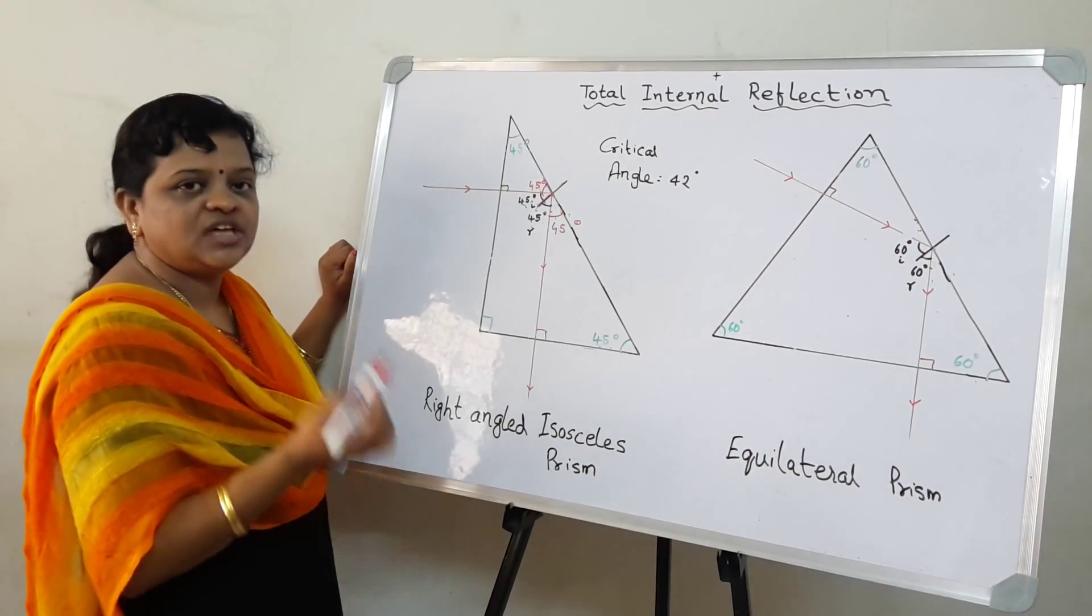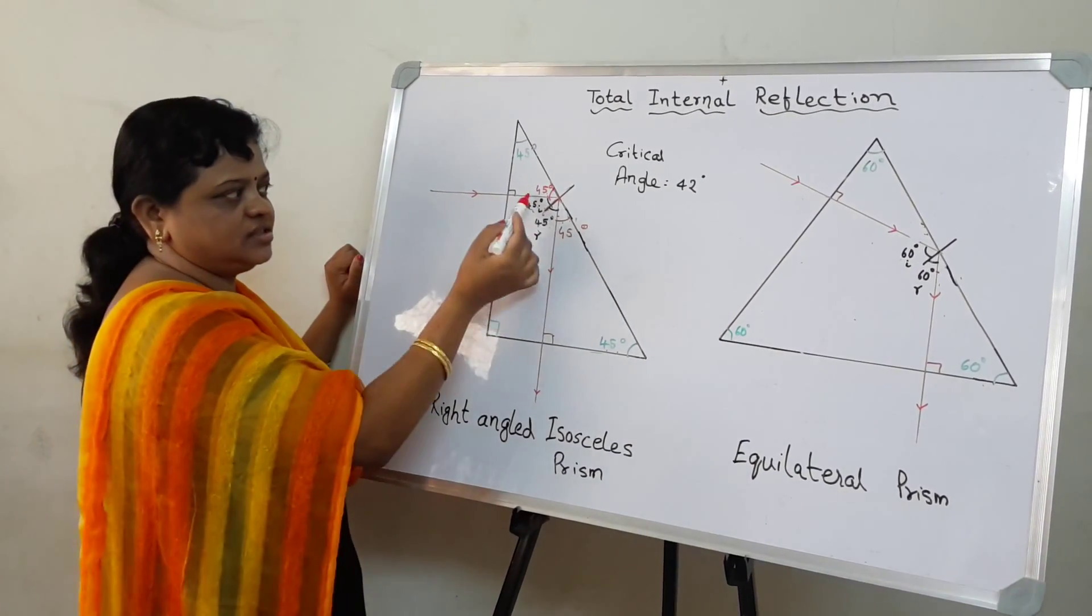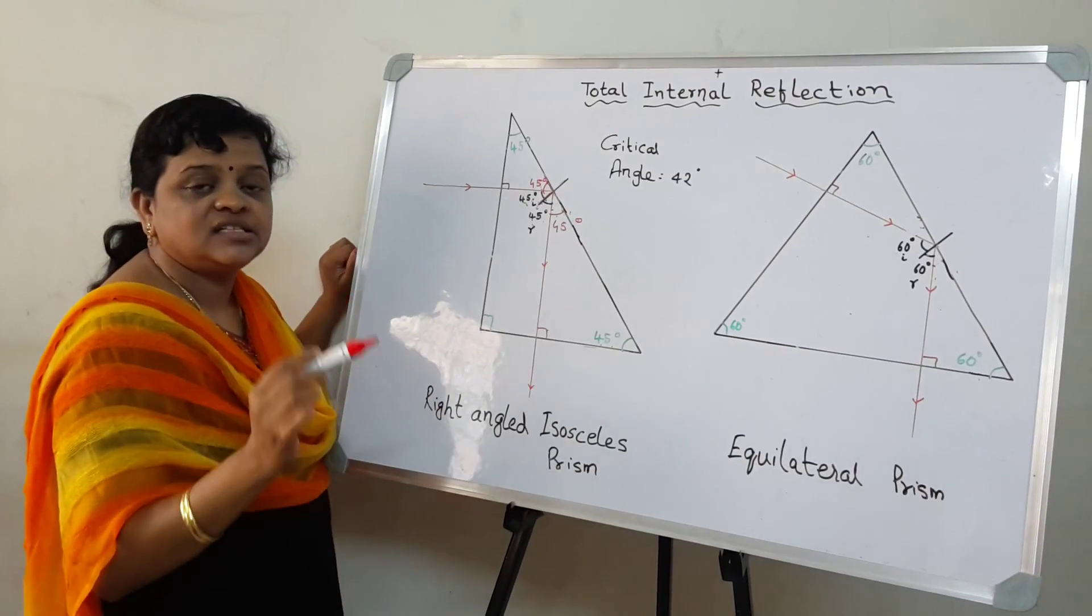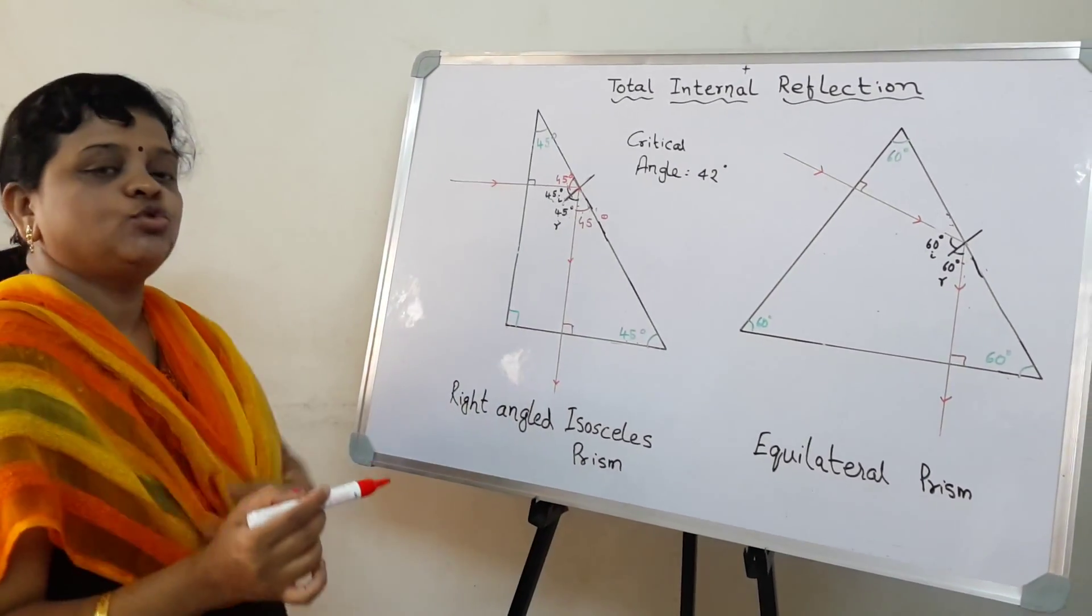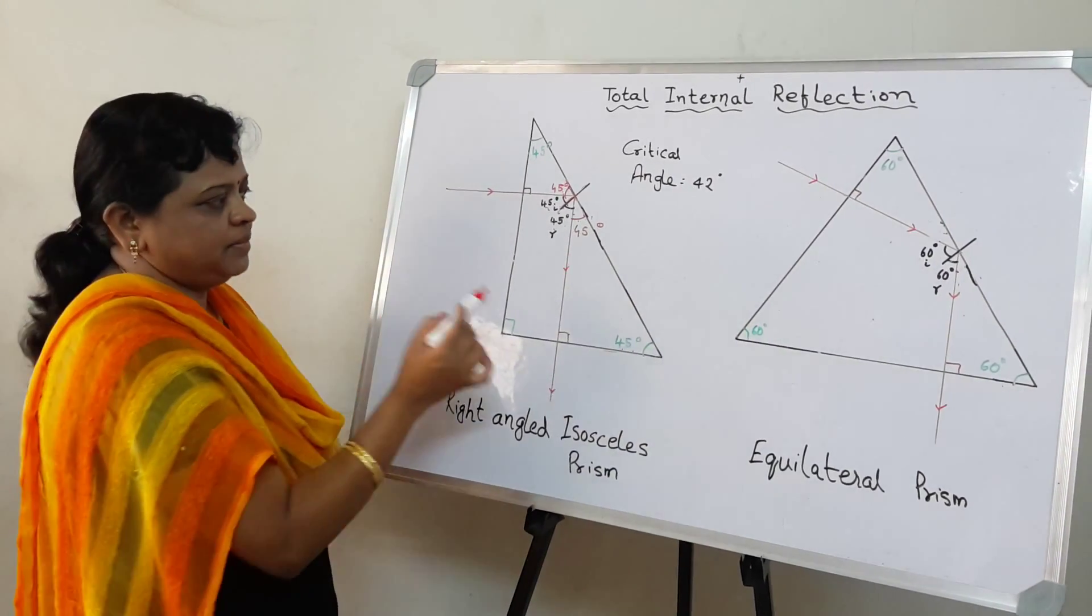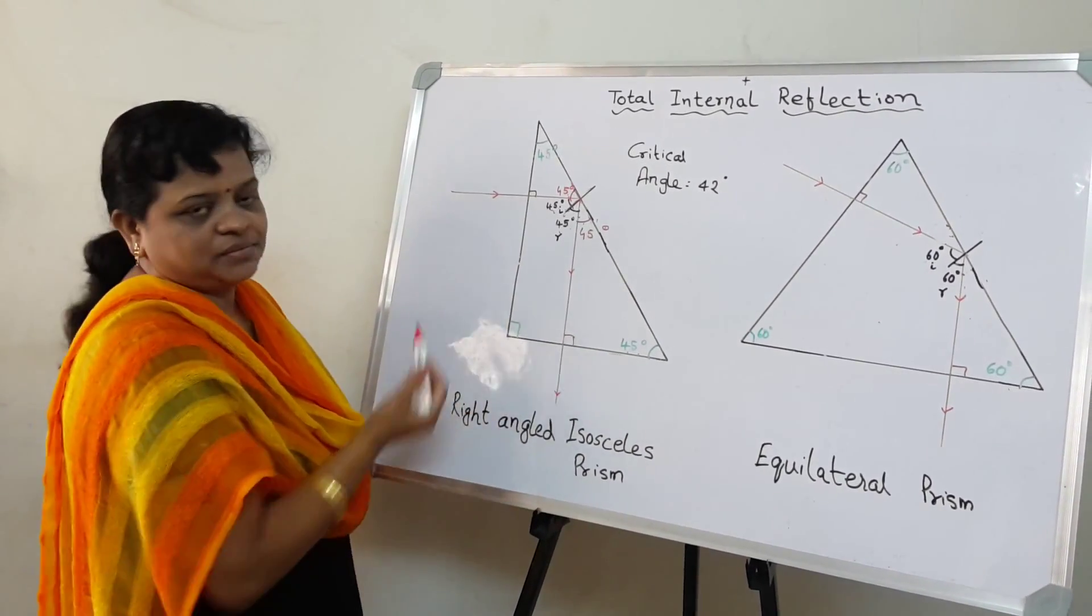So this is the way you deviate an angle through 90 degrees total. And this is used in a periscope, sophisticated periscopes. We don't use mirrors in them, but we use prisms.